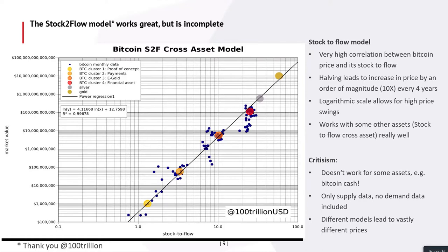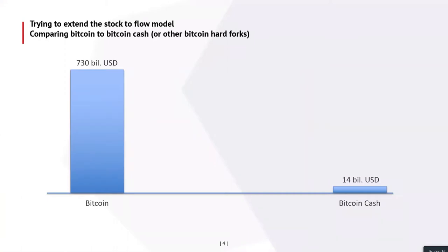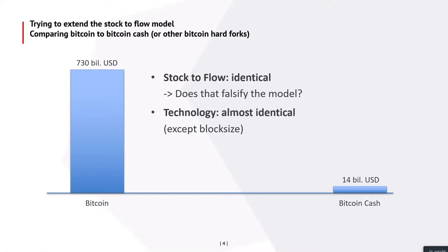Let's look at the demand side — I think it's really important. Bitcoin has a high valuation, and I think before the dip in May, we were very close to the prediction of the stock-to-flow model. Bitcoin Cash has a very low valuation but more or less the same stock-to-flow, and the technology is almost identical — it's just the block size that's different. So the question is: does the fact that Bitcoin Cash doesn't fit the model invalidate it? I don't think so. I think the model is not complete. The difference between Bitcoin and Bitcoin Cash is the network — we need to look at network effects to fully understand the model.